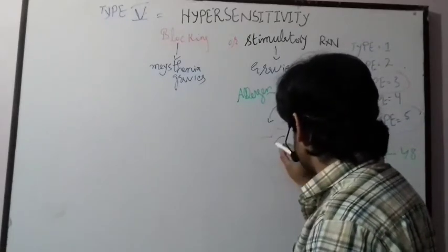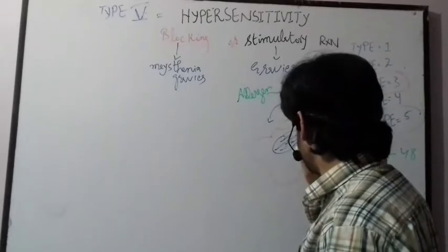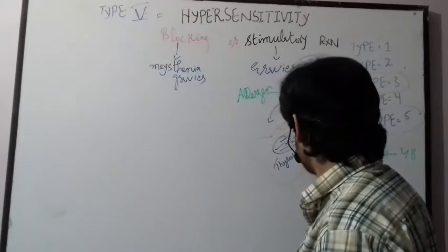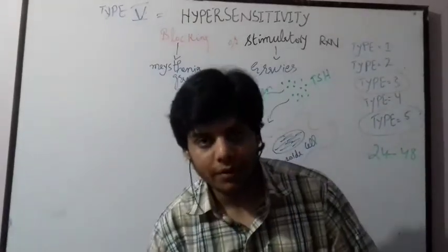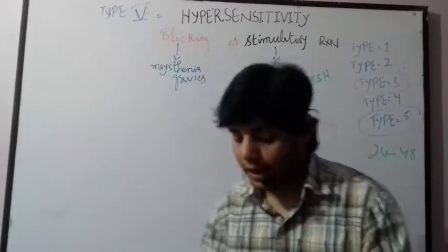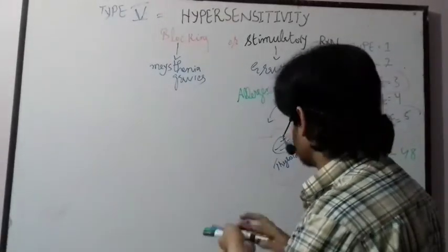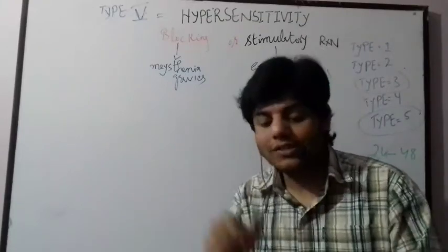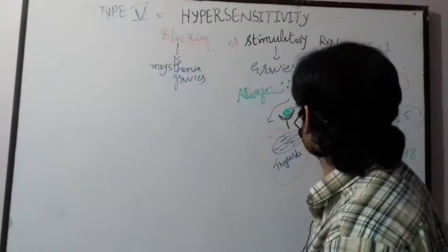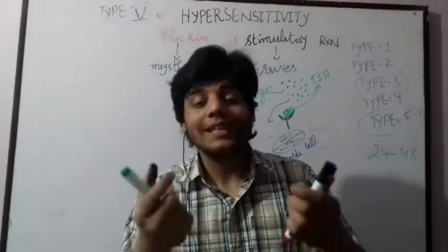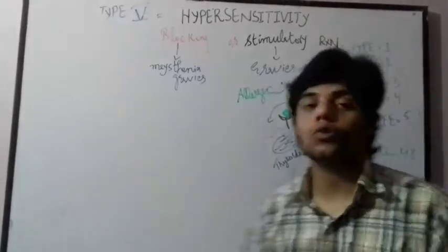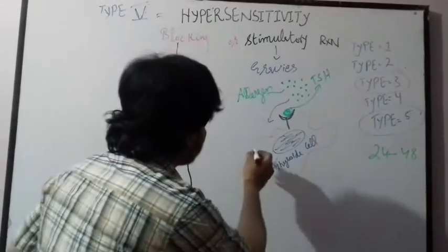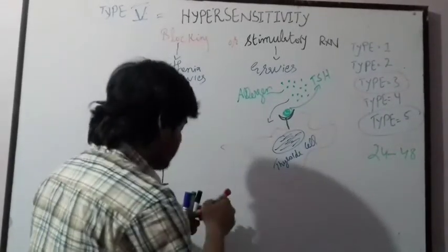So we have thyroid cells with a nucleus and genome. A large number of thyroid cells are activated because this is a hypersensitivity reaction. Each thyroid cell has receptors, and these receptors receive the signal of the thyroid-stimulating hormone, which is acting as the allergen. Once they receive the signal, the thyroid cells secrete thyroid hormones.